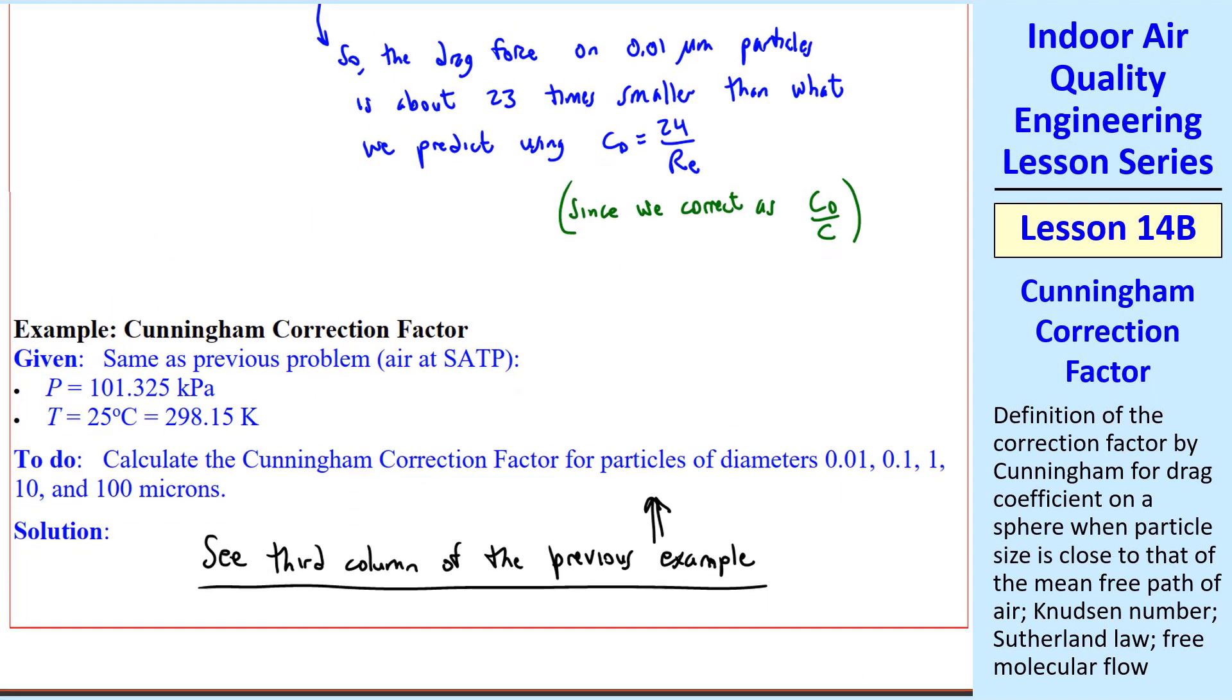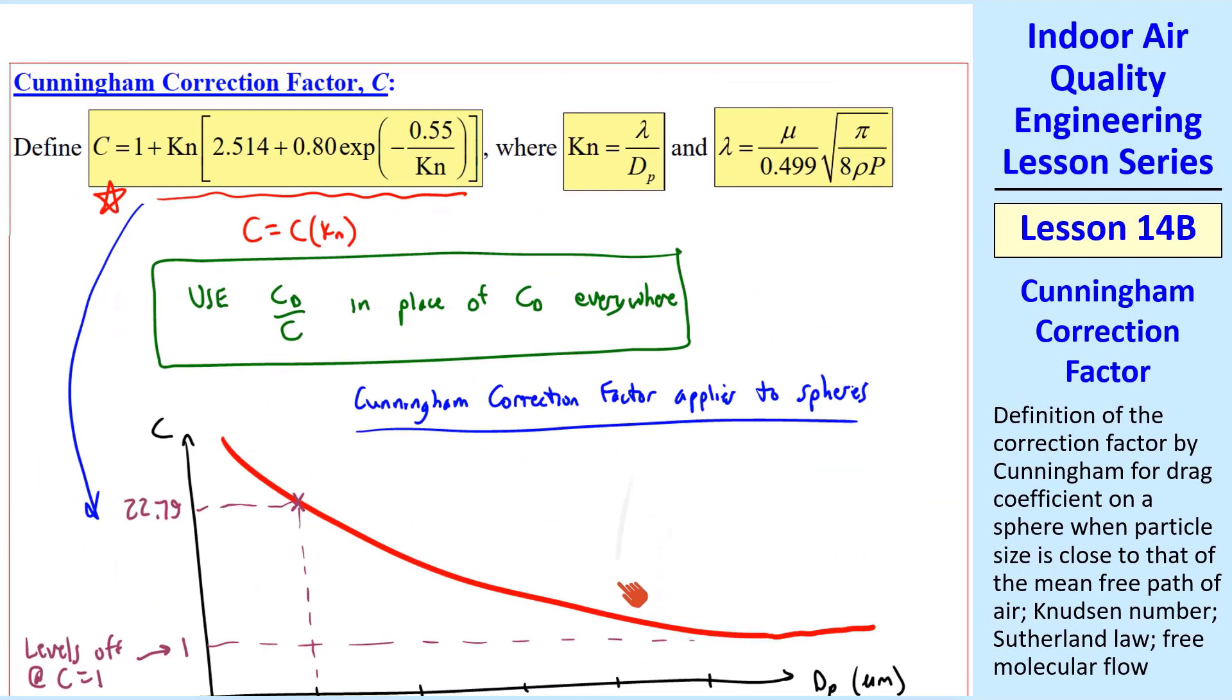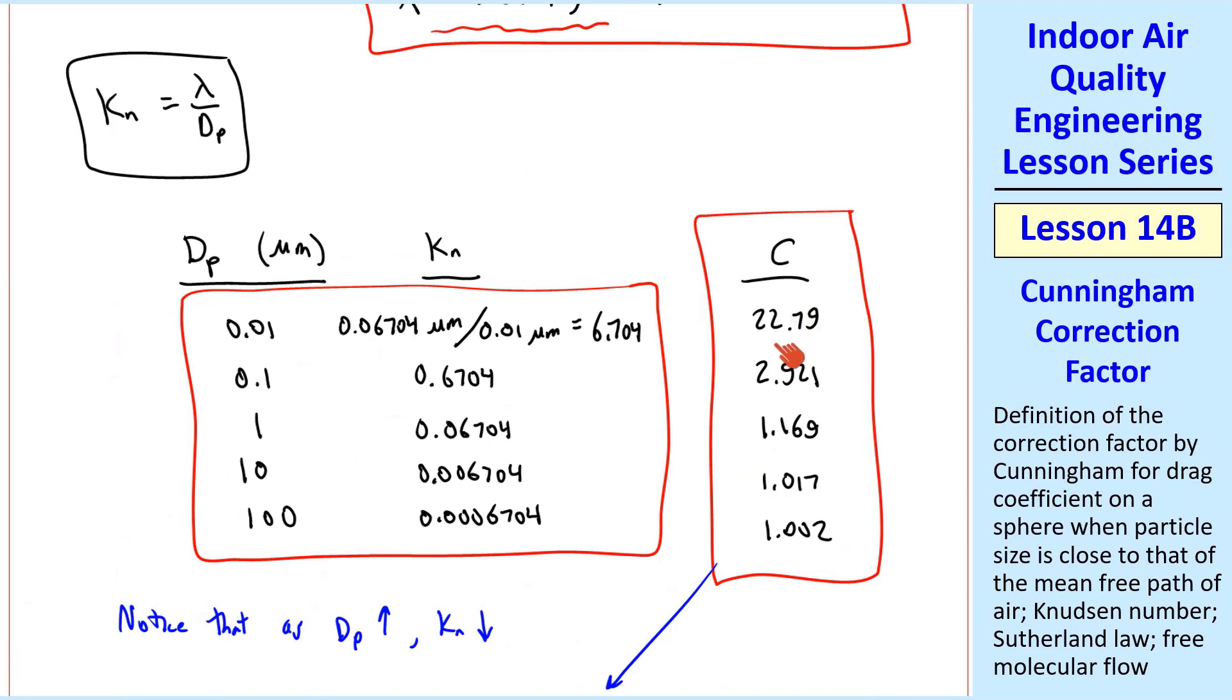Let's do another example problem. It's the same as the previous problem, air at SATP. Here we want to calculate Cunningham correction factor for these same five particles. I added a third column to the previous example results. Here's a column of Cunningham correction factor as a function of dp, where we calculate C based on the Knudsen number. As I had plotted, C goes down as particle diameter goes up. So as particle diameter increases, Knudsen number decreases, and C also decreases. But it doesn't go to 0, it levels off at 1.